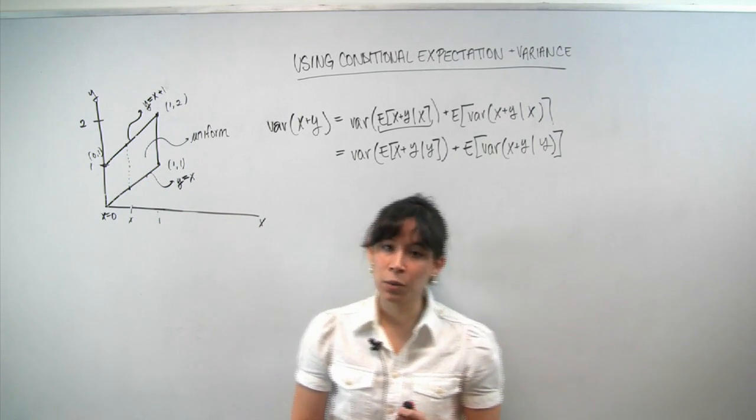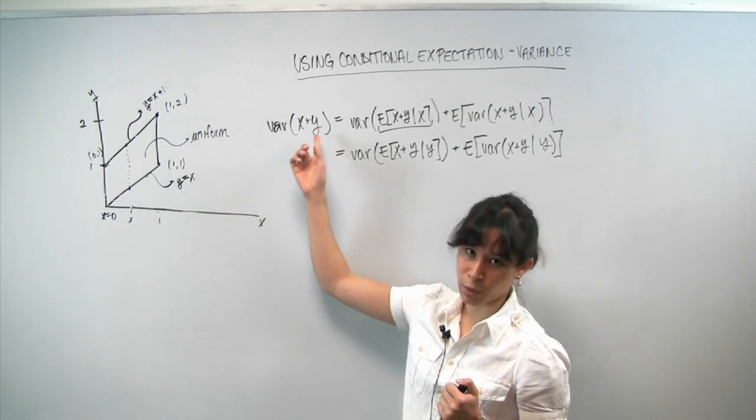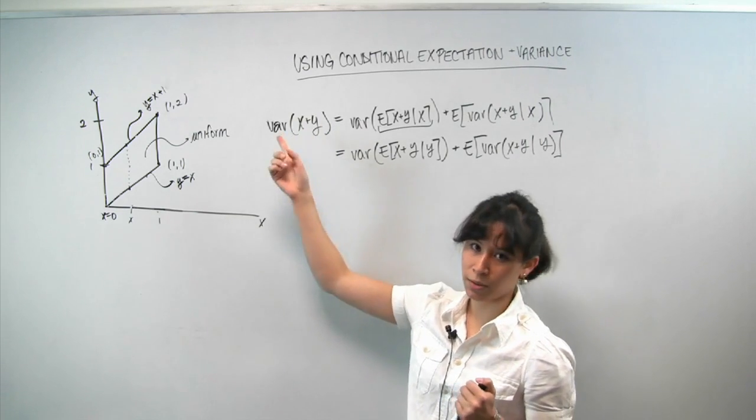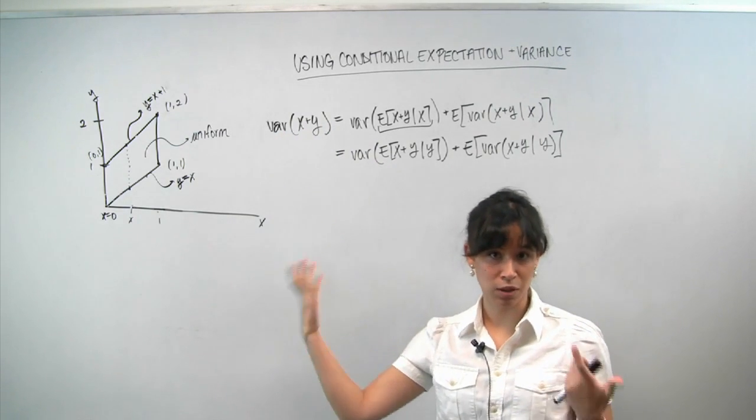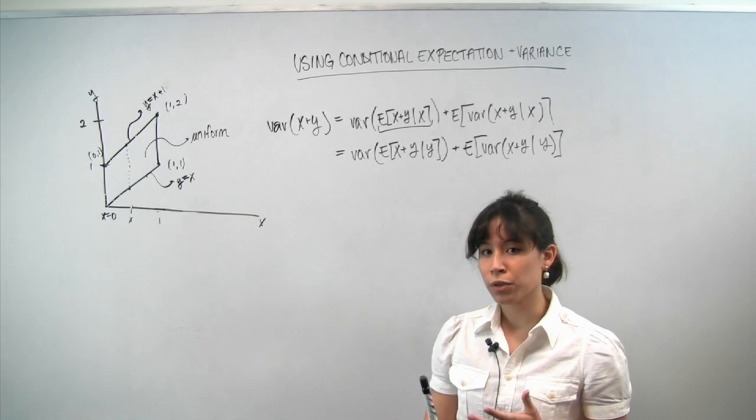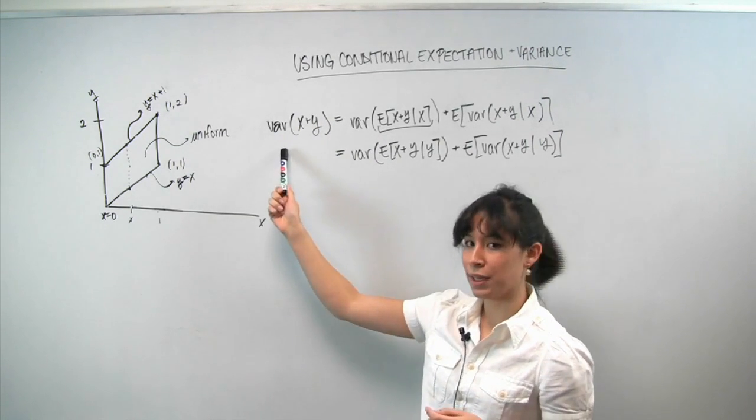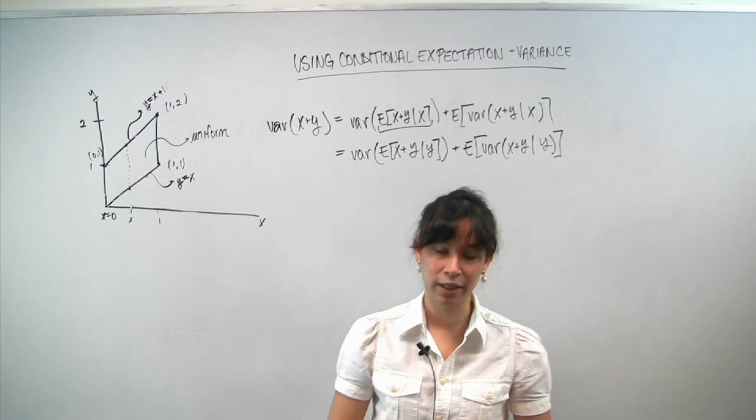And then we are asked to compute the variance of x plus y. So you can think of x plus y as a new random variable whose variance we want to compute. And moreover, we're told we should compute this variance by using something called the law of total variance.